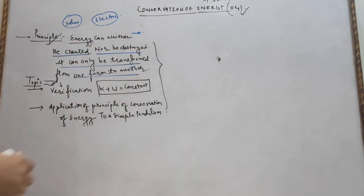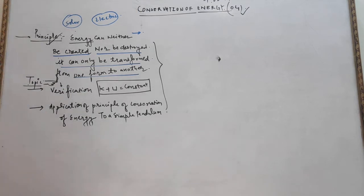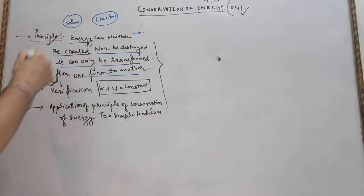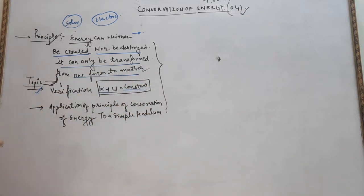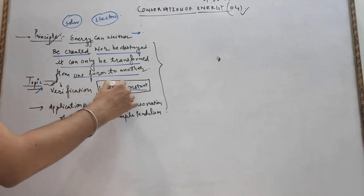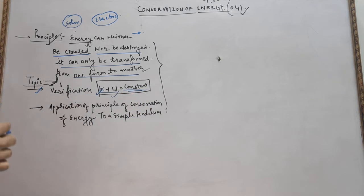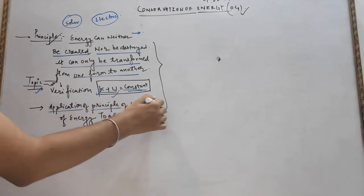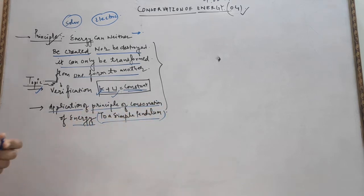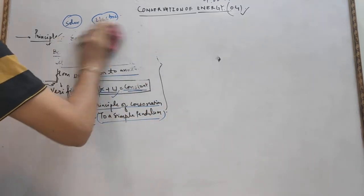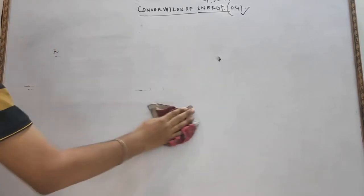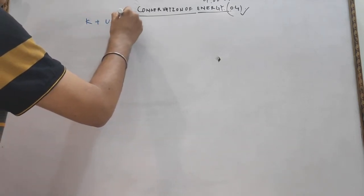In simple words, energy cannot be destroyed — it can only be transformed from one form to another. So today we will discuss some concepts related to this topic. According to the principle of conservation of energy, at every point the total energy must always remain constant, that is, kinetic energy plus potential energy always remains constant. We will now prove this.